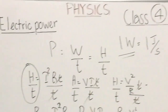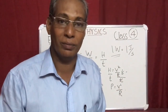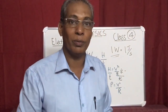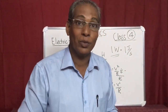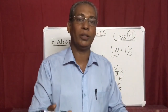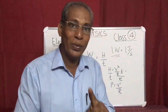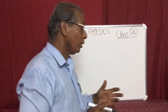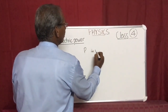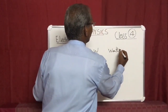One joule per second is called a watt. This name is given in honor of James Watt, the scientist. There is a funny thing about watt — there is only one question in physics having the same answer: 'What is the unit of power?' — the answer is 'watt.' If we are taking power P in watts, we call it wattage.